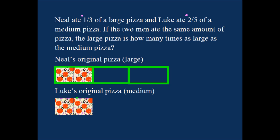Luke's pizza, this is two fifths, so this has to be one fifth. Half of this has to be one fifth. So this is one fifth, because what Luke ate was two fifths. So this is one fifth, two fifths, the whole medium pizza must have looked like three fifths, four fifths, five fifths.